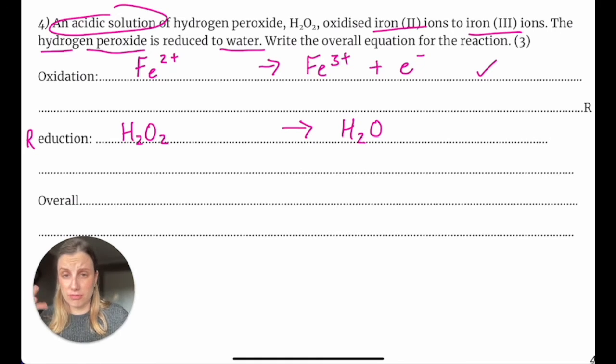Now, when I look at the reduction, there is literally no way for me to balance this. I can't add a 2 here and everything magically works because I've got hydrogens and oxygens on both sides. So the fact that they told you that it's an acidic solution is telling you that you can add more H+ to this example to help you solve it.